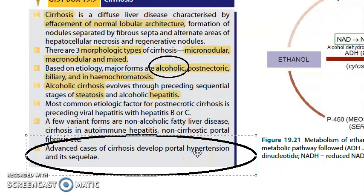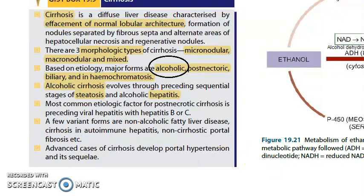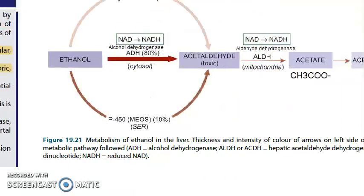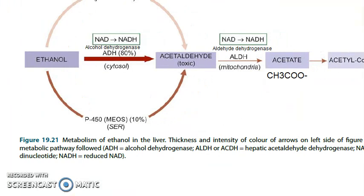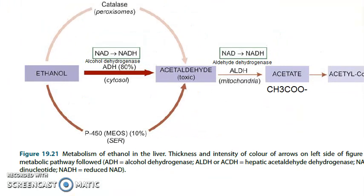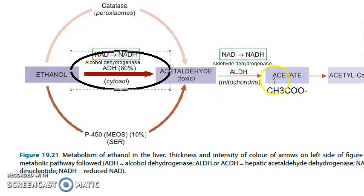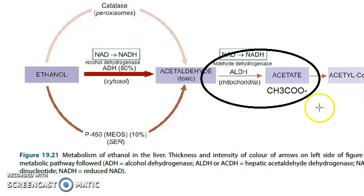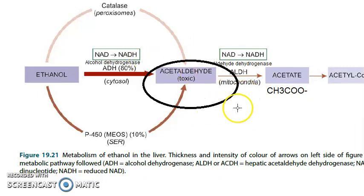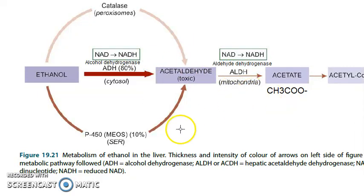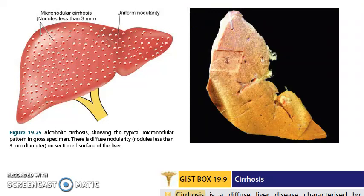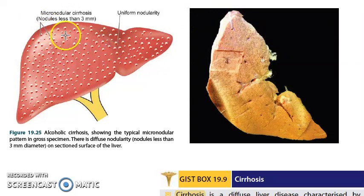We also saw the metabolism of ethanol in the liver: alcohol dehydrogenase, aldehyde dehydrogenase, etc. Remember the aldehyde is toxic. One more important point: in alcoholic cirrhosis it is micronodular.